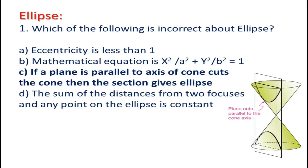Ellipse. Question number 1: Which of the following is incorrect about ellipse? A. Eccentricity is less than 1. B. Mathematical equation is x² upon a² plus y² upon b² equals 1. C. If a plane is parallel to the axis of a cone and cuts the cone, then the section gives an ellipse. D. The sum of the distances from two foci to any point on the ellipse is constant.